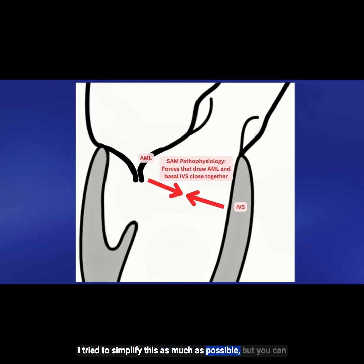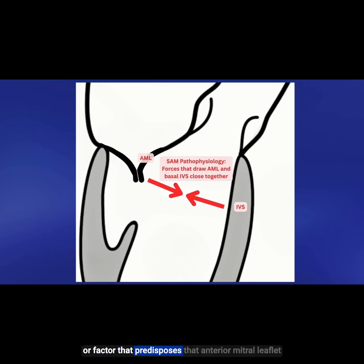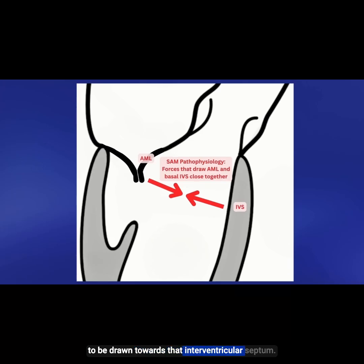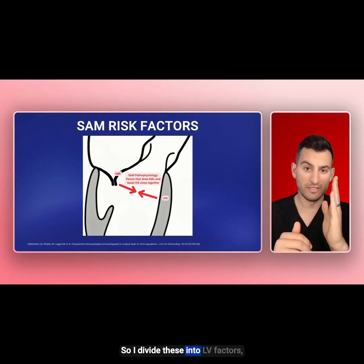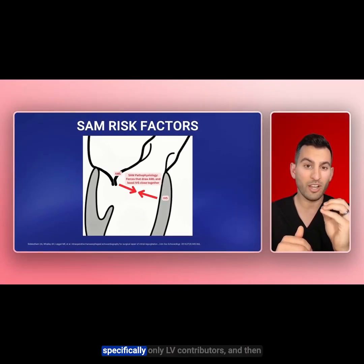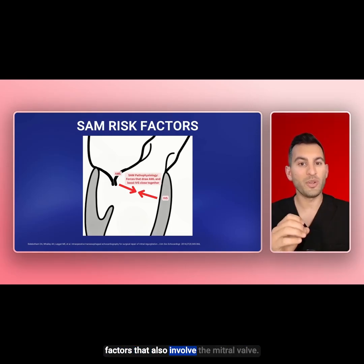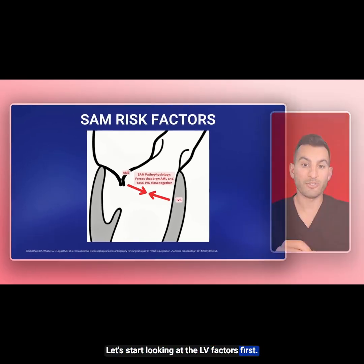You can think about the pathophysiology of SAM as any force or factor that predisposes that anterior mitral leaflet to be drawn towards that interventricular septum. I divide these into LV factors — specifically only LV contributors — and then factors that also involve the mitral valve. Let's start looking at the LV factors first.